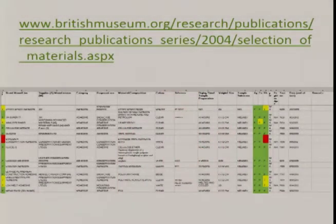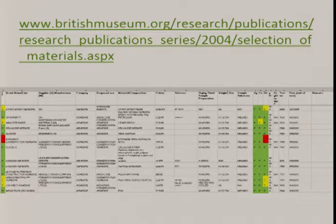As we approach the 45th anniversary of Andrew Oddy's initial publication, with a generation's worth of trials and experience behind us, it's time for us to address this topic of standardizing the test and sharing the results. About 10 years ago, the British Museum started making their own recent results available on their website — here is the URL and an image of what their database, their Excel spreadsheet of test results, looks like.